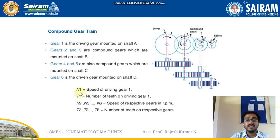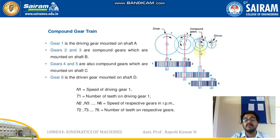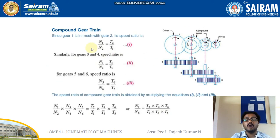Let N1 be the speed of the driving gear, and T1 be the total number of teeth on gear 1. Similarly, N2, N3, N4, N5, and N6 are the speeds of the respective gears, and T2, T3, T4, T5, T6 are the total number of teeth on the respective gears.